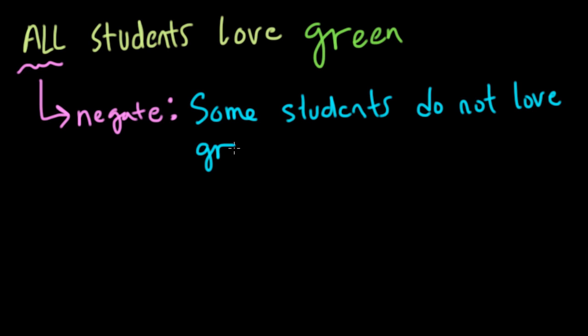And it really means at least some students because all students could not love green. That's true. But when you're negating it, you in general would say some students do not love green. That's a negation.